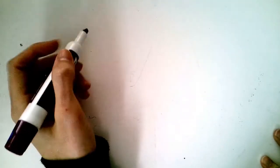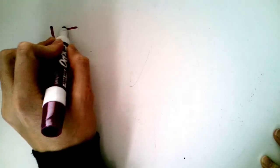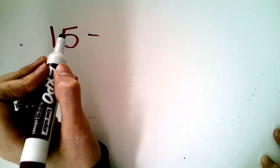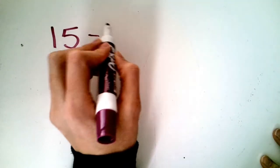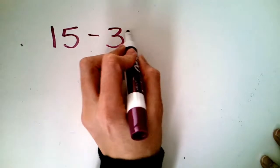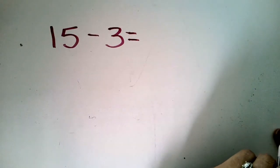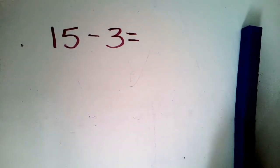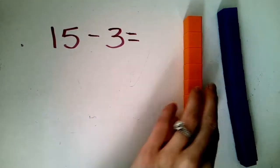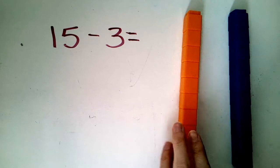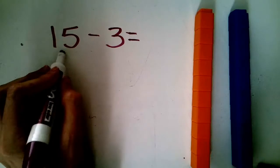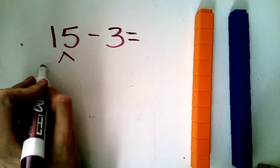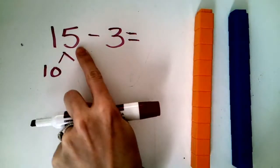I'm going to go ahead and start with this number sentence and you can write this with me. We're going to start with 15 take away, let's do three to start. 15 take away three. Now, you do not need to get yours. I brought my cubes just for some practice here.